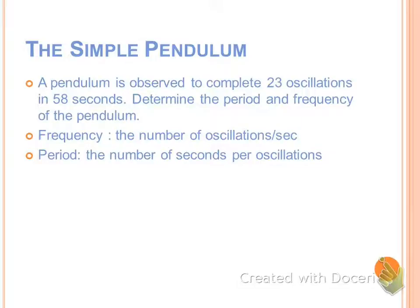Yeah, divide oscillations by seconds. So we take 23 divided by 58, and we should get about 0.4, essentially 0.396. Okay.